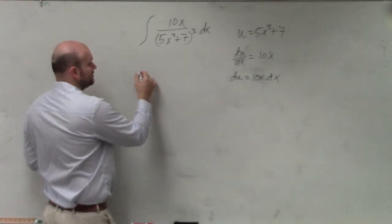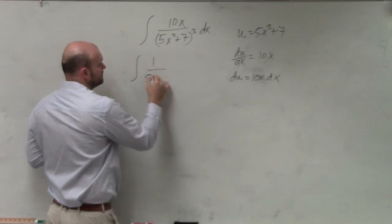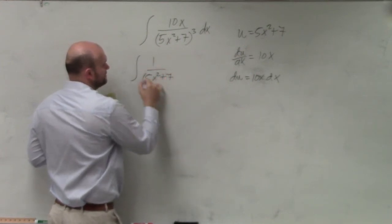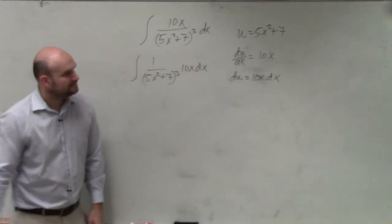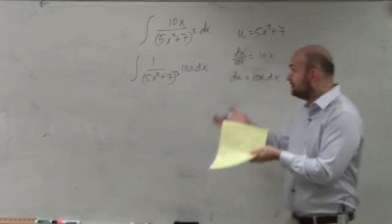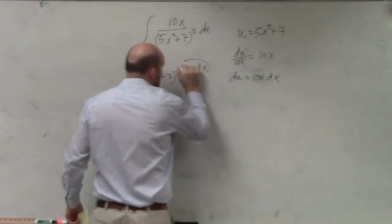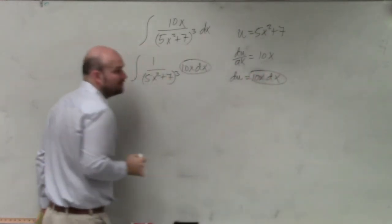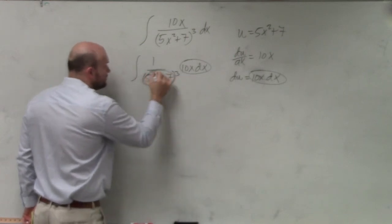So basically, what you see is 1 over 5x squared plus 7 cubed times 10x dx. That's what I just want to kind of get you guys. This is what I was explaining in that last one. You have this times 10x dx. Well, what is 10x dx? 10x dx is equal to what? Du.